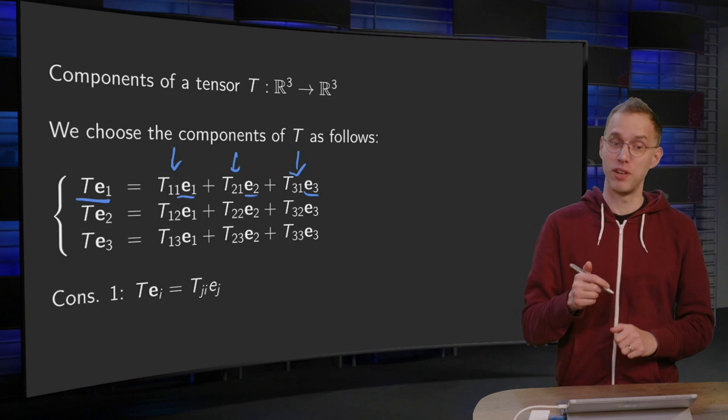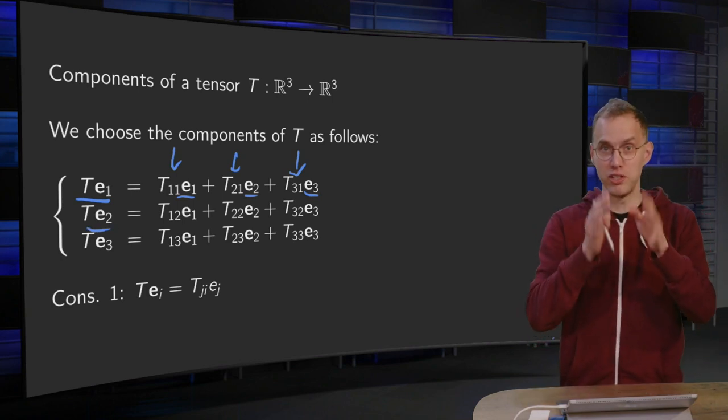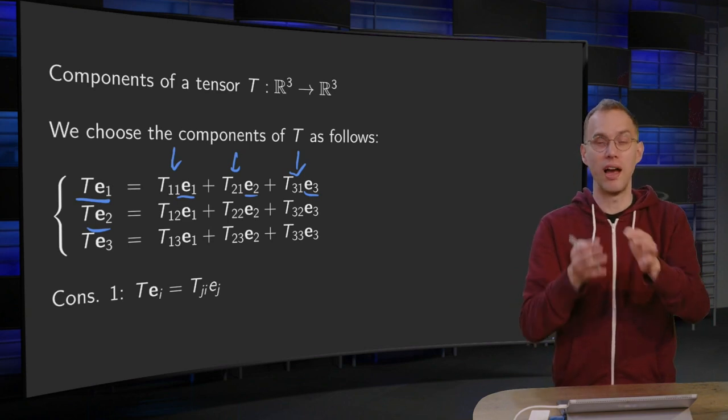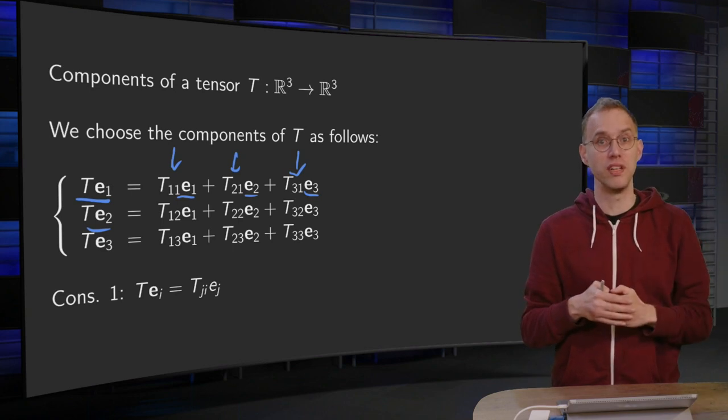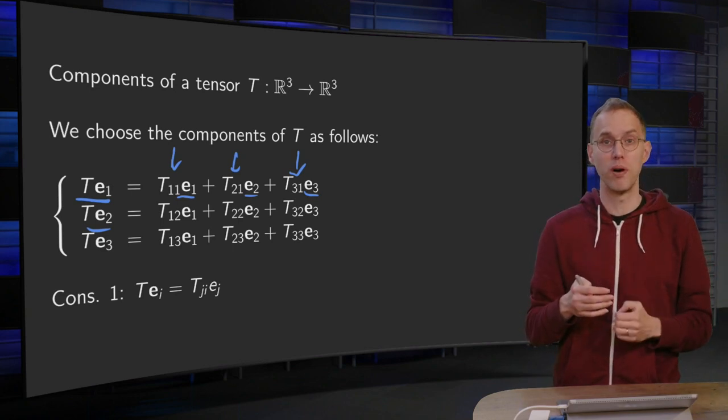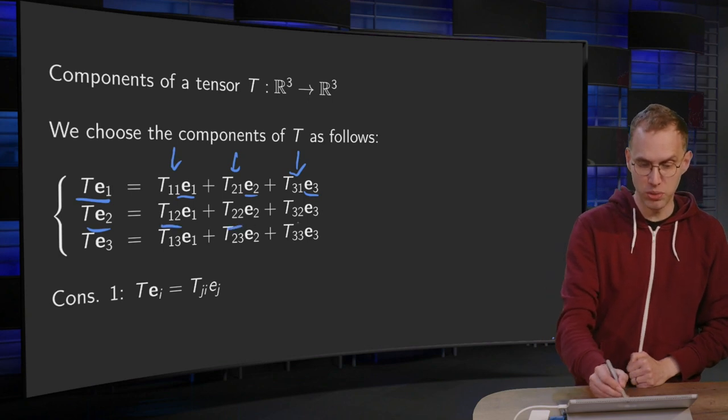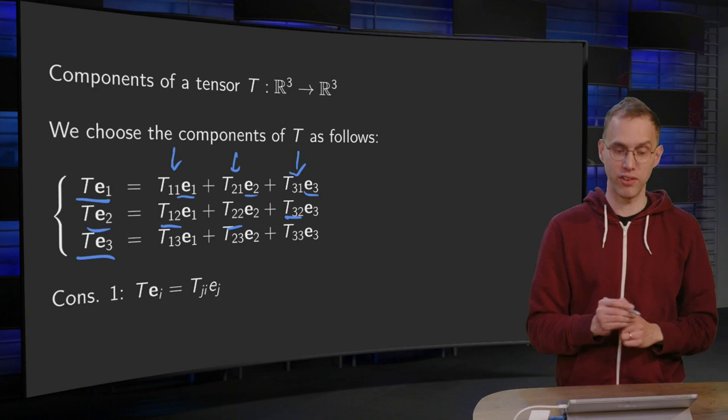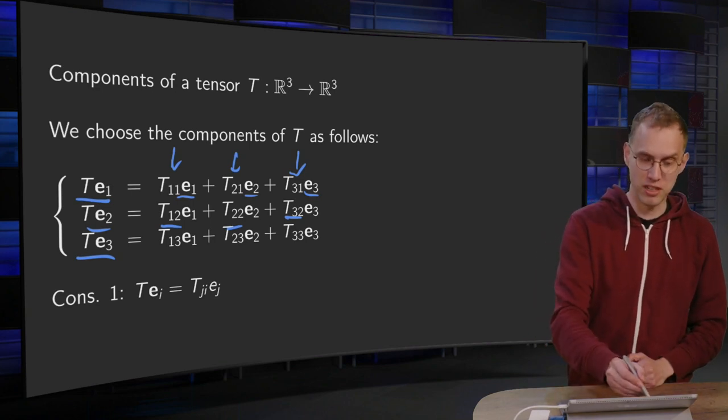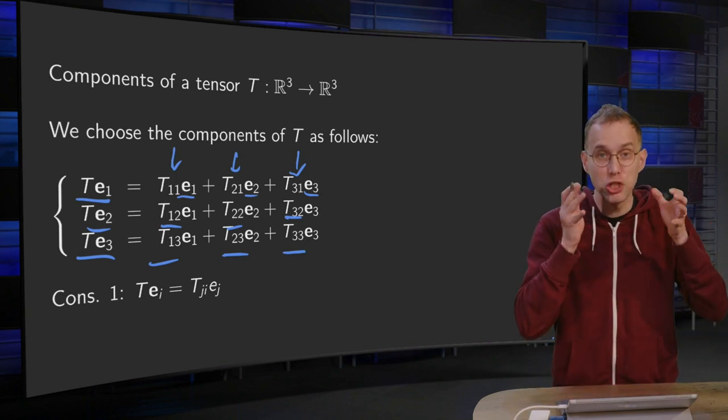Similarly for the T of E2. So we have our E2. We compute T of E2 and we get some vector. We can write down the components of T of E2. And we call these components, the first, second, and third, T12, T22, and T32. And similarly T of E3 defines the components T13, T23, and T33. So that is a choice we make.